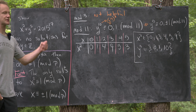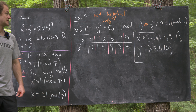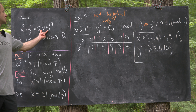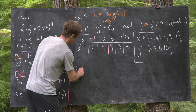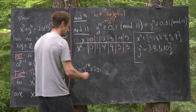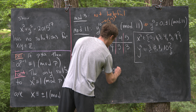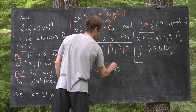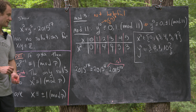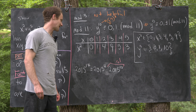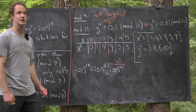Those are the only possibilities for x squared and y to the 5th. Now let's reduce 2015 to the 17 mod 11 and see what we get. Since 2015 is not divisible by 11, we can use Fermat's Little Theorem. So 2015 to the 17 is the same as 2015 to the 7 times 2015 to the 10, and working mod 11, the 2015 to the 10 part is congruent to 1. Reducing 2015 mod 11 gives 2, so this becomes 2 to the 7 mod 11.